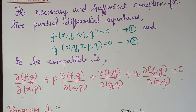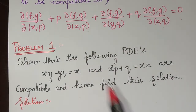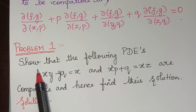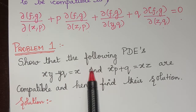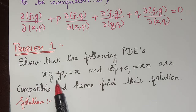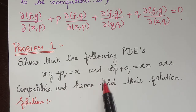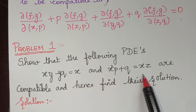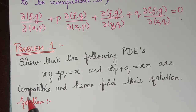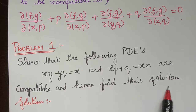Now let us solve a problem on this. Here we have a problem which says: show that the following partial differential equations, xp minus yq equal to x and x squared p plus q equal to xz, are compatible and hence find their solution.